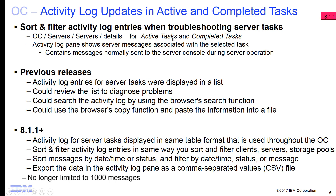This applies to either the active tasks or the completed tasks. Inside of the Operations Center, underneath the server detail site, we have our active tasks and completed tasks. If you click on one of these, you'll see the list of activity log information associated with that task — messages that might be informational, warning, or error messages. There can be thousands of messages associated with one specific task. In previous releases, there was limited ability to sort, filter, or export those messages to a file.